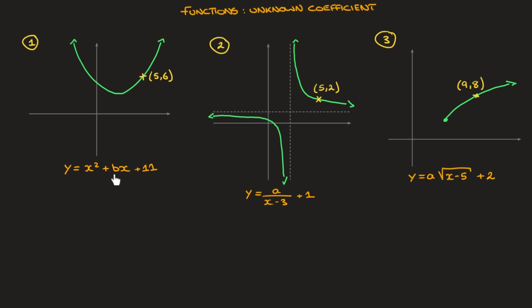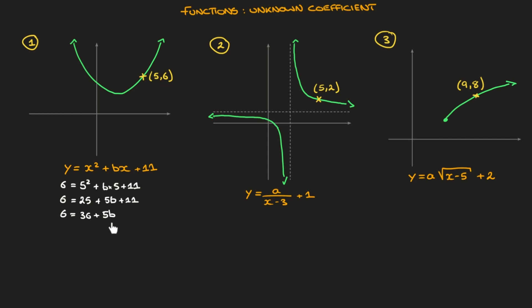To find b, all I need to do is replace every x I see in this equation by 5, and y on the left-hand side by 6. So that gives us 6 equals 5 squared plus b times 5 plus 11. Calculating that leads to 6 equals 25 plus 5b plus 11, which gives us 6 equals 36 plus 5b. We're now faced with an equation for the unknown coefficient b, so all we need to do is solve it.